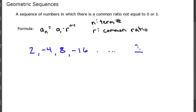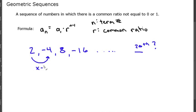Let's look at another example: 2, negative 4, 8, negative 16. We're asked to find the 20th term. First we need to figure out the common ratio. To go from 2 to negative 4, we're multiplying by negative 2. To go from negative 4 to 8, we multiply by negative 2 again, because negative 4 times negative 2 is positive 8.